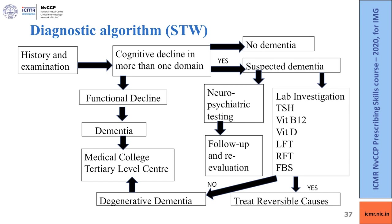Order the lab investigations discussed, do neuropsychiatric testing, and find out whether there is a reversible cause. If yes, treat the reversible cause. If no reversible cause is found, the patient probably has degenerative dementia and should be sent to a higher centre. If there is a functional decline, refer directly to a higher centre for expert treatment.